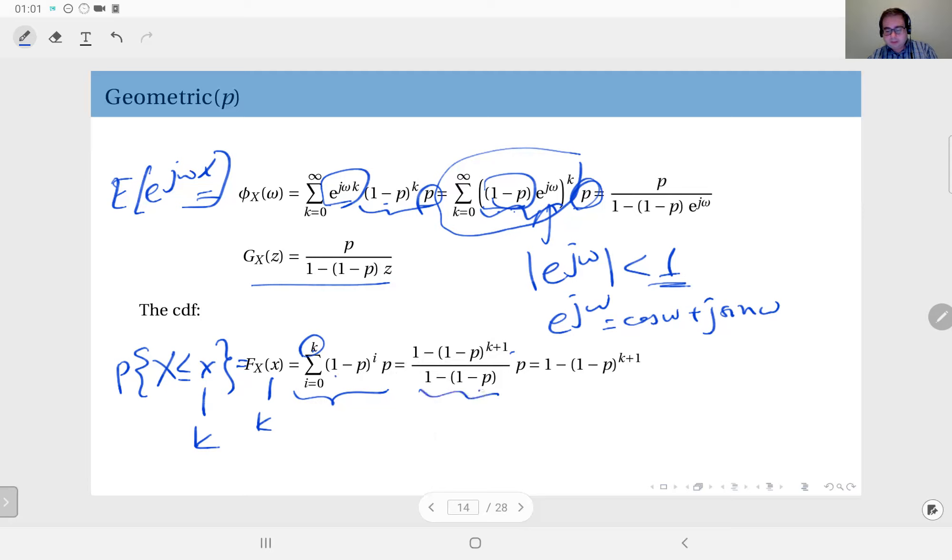So this is p, and this cancels out with this. Therefore you get this: 1 minus 1 minus p to power k plus 1. Or alternatively, you can observe that the probability that this is less than or equal to k means what?